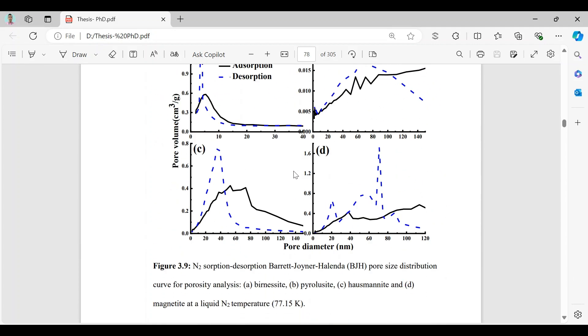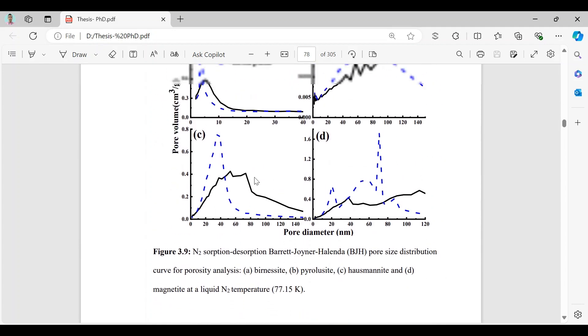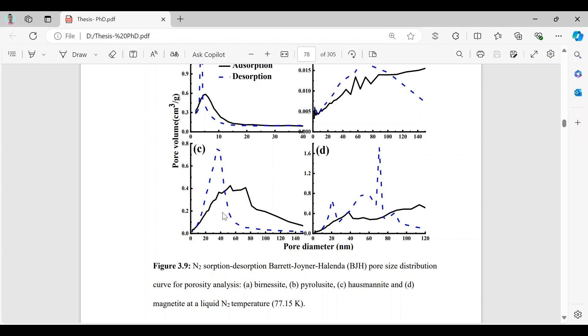And similarly for hosmanite we also see both mesoporous and microporous hierarchical structure. And for magnetite we also see both mesoporous and microporous hierarchical structure.